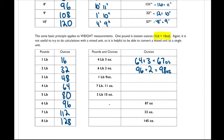Going backwards: 87 ounces is how many pounds and ounces? Look at the table — the largest amount up to 87 is 5 pounds, which gives 80 ounces. Subtract 80 from 87 and there are 7 ounces remaining. So 87 ounces equals 5 pounds 7 ounces. I'll pause the video and give you a chance to complete the table on your own.